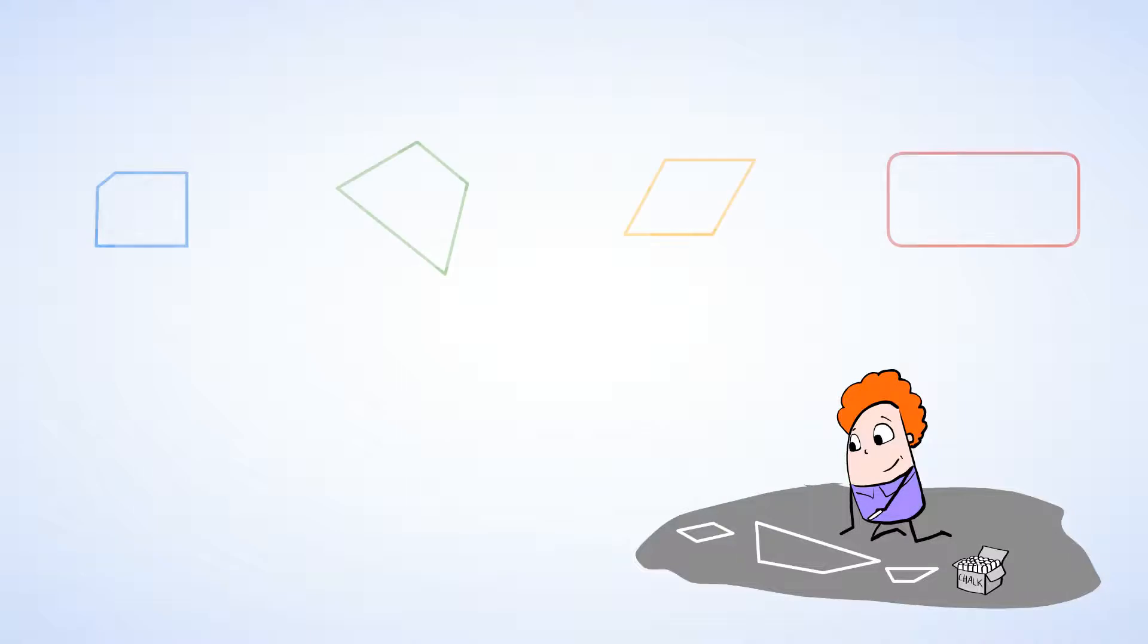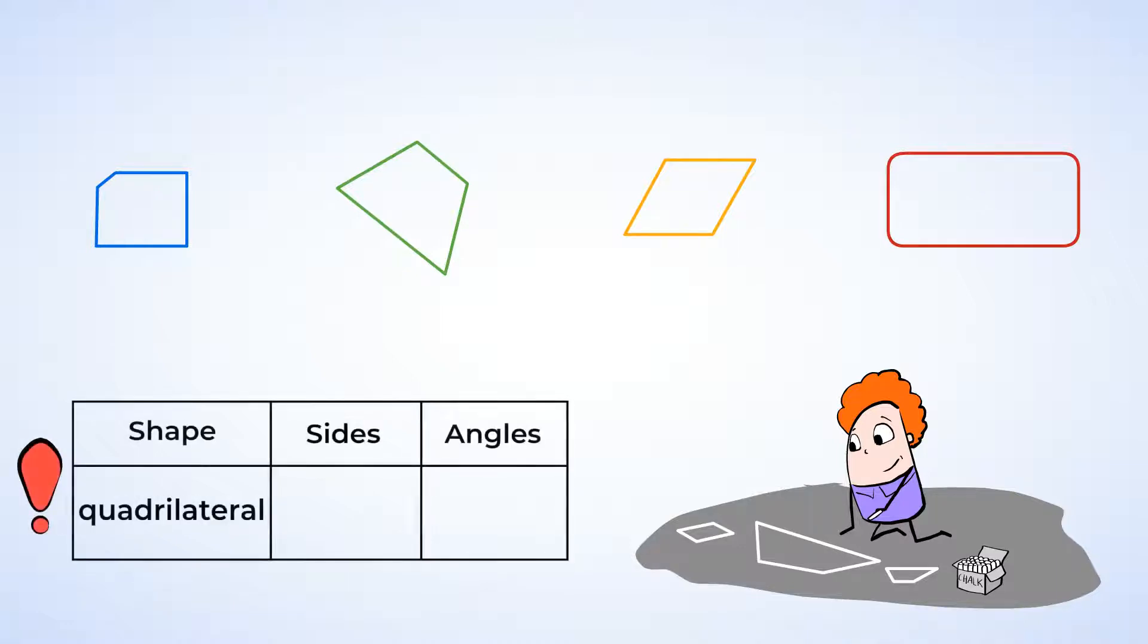He's drawing quadrilaterals. And it looks like he needs some help. Let's take a look. Remember, a quadrilateral has 4 sides and 4 angles. Let's check each of the shapes.